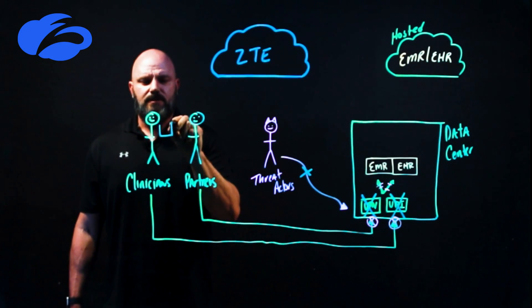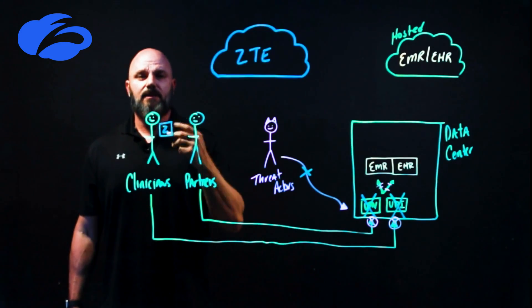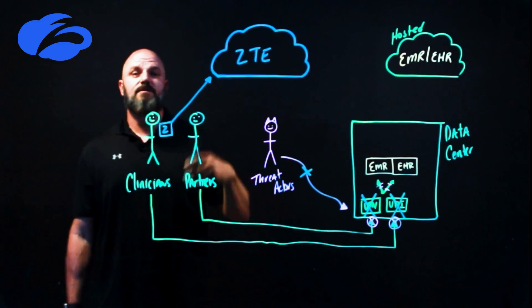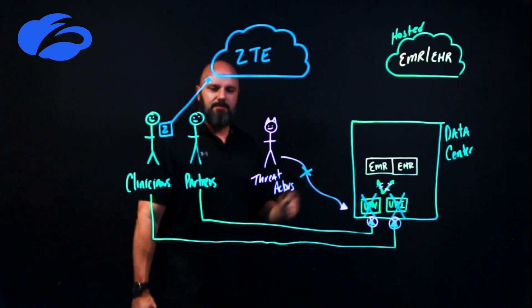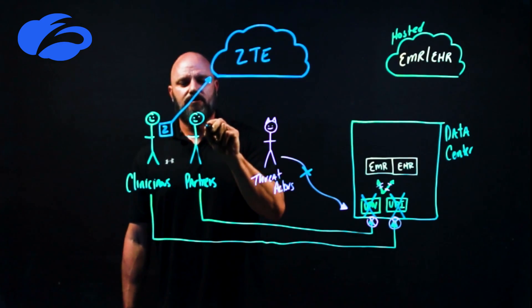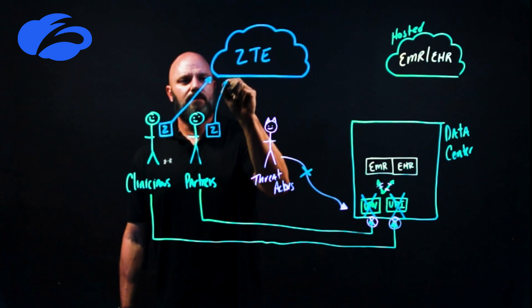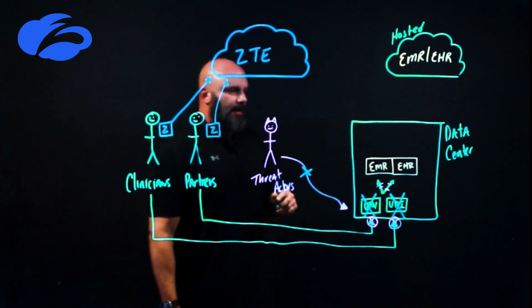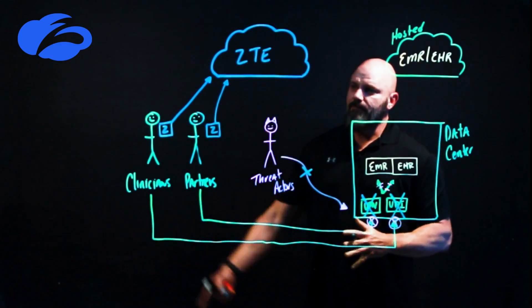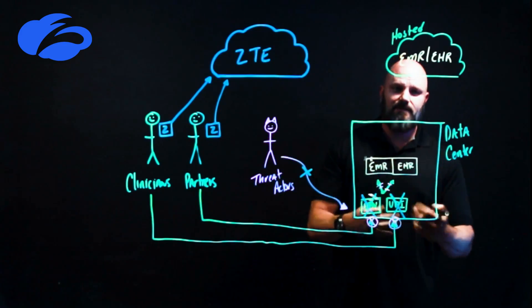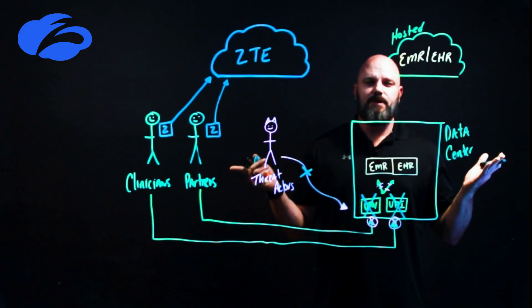From your clinicians, the way that we're going to do this is we have a little agent called Zscaler Client Connector. And long story short is that traffic is going to flow in this direction towards the zero trust exchange. Same thing with your partners, they get a fancy little agent as well. By the way, this does support Imprivata.